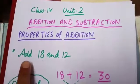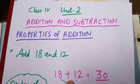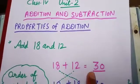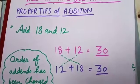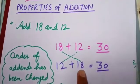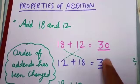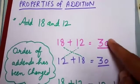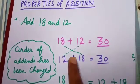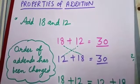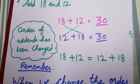Now if I want to add 18 and 12, 18 plus 12 is equal to 30. If I change the order of addends, 12 plus 18 is also equal to 30. It means the sum remains the same even after I have changed the order of addends. 18 plus 12 is equal to 12 plus 18.